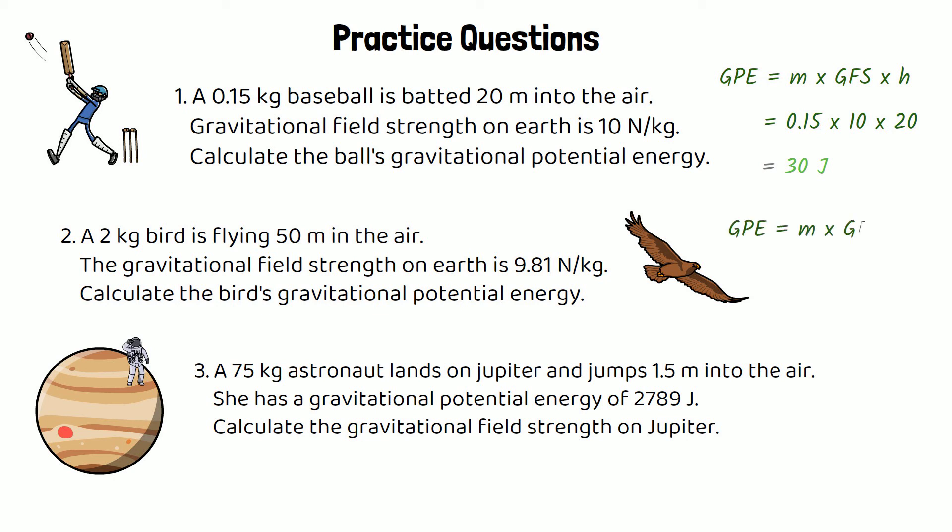For the second one, same equation, but this time mass is 2. Gravitational field strength is 9.81 and height is 50, which gives us 981 joules.